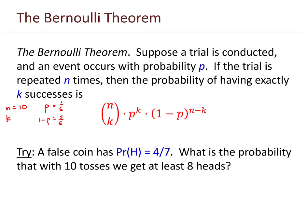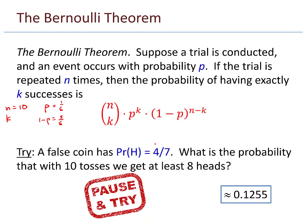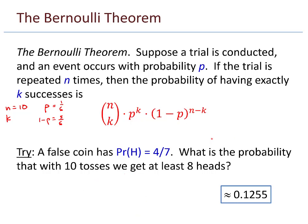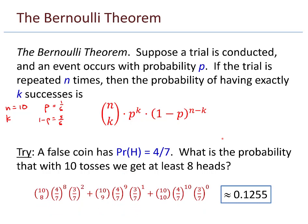Here's one for you to try. A false coin has a probability of showing heads of four-sevenths. What's the probability that with 10 tosses we get at least 8 heads? Here's the numerical answer — pause the video and try to find the expression that gives you that answer. The solution adds three terms using the Bernoulli theorem: the head shows eight times, or nine times, or ten times.